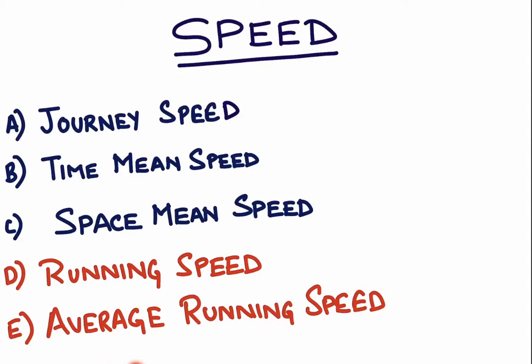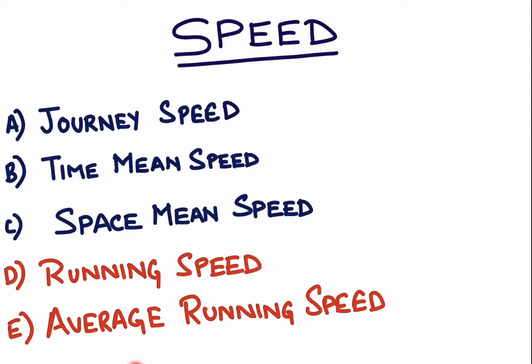First, let us clarify what journey time and running time are. Journey time is when we include stop time in a journey, while if the stop time is not included, it is called running time. We can understand this through an example.